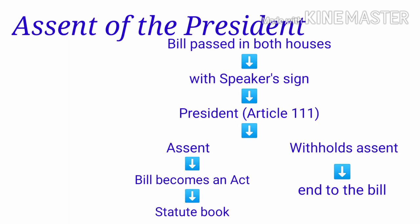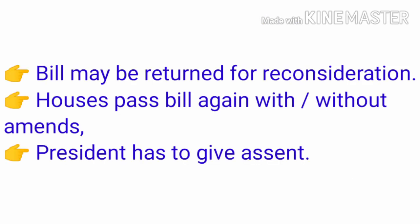A bill finally passed by both Houses is presented with the signature of the Speaker to the President for his assent, as per Article 111 of the Indian Constitution. If the President gives assent, the bill becomes an act and is placed in the statute book. If the President withholds assent, there is an end to the bill. The President may also return the bill for reconsideration. If the Houses pass the bill again — with or without amendments — it is presented to the President a second time, and this time the President has no power to withhold his assent.